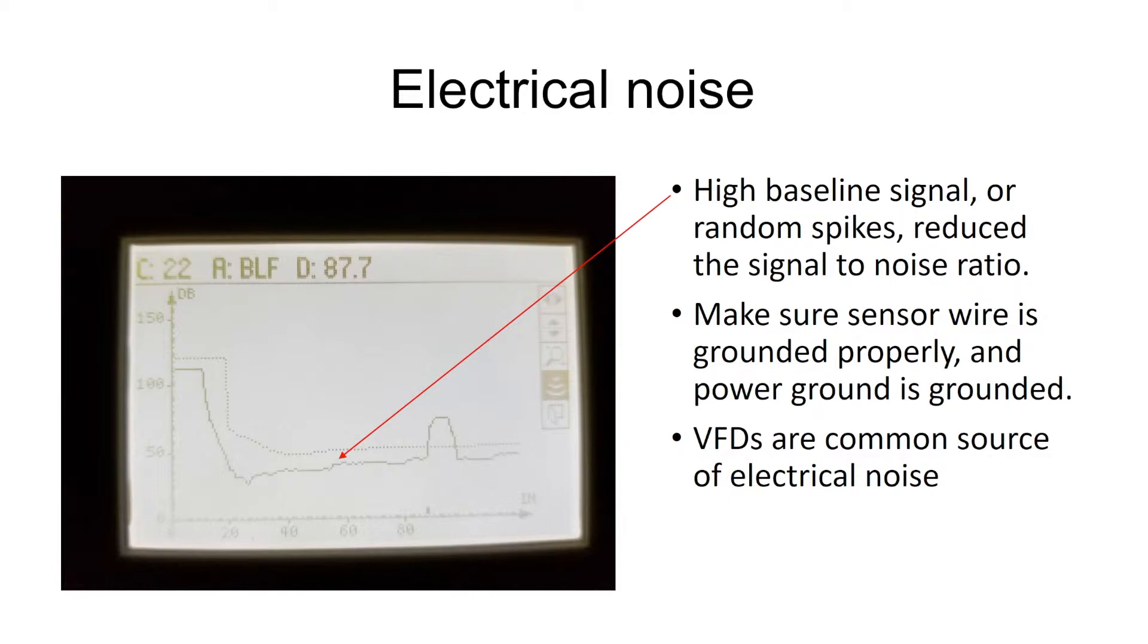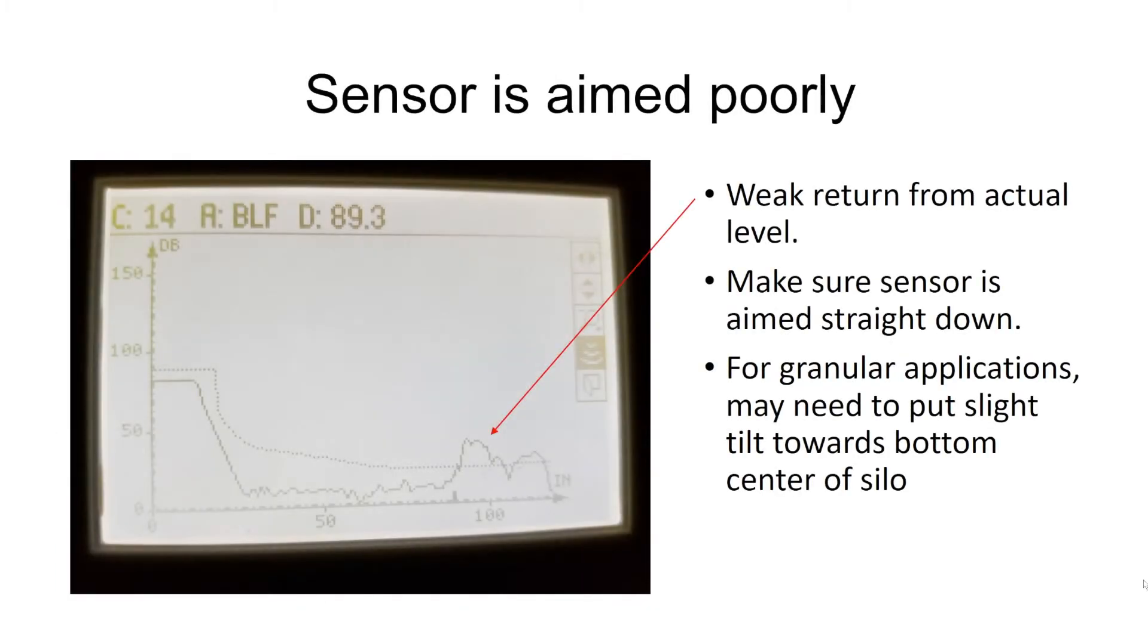So, if possible, I want to make sure that the VFDs are wired right using the correct type of wire, they're filtered correctly to try to reduce the amount of noise, and also, I want to make sure that the sensor, the ultrasonic sensor wire is not in the same conduit as any type of AC power line. I want to keep that separate from any of our noise generating lines.